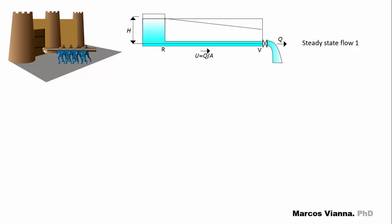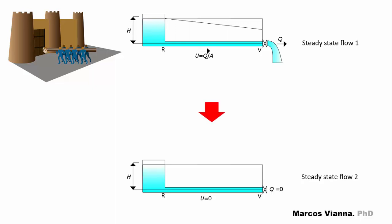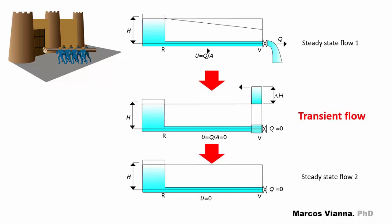When the water flows without having its properties change over time, we say that it's in a steady flow condition. When the water is not flowing, it's another steady flow condition. As the flow condition changes from one steady flow state to another, a transient flow condition occurs. It's in this condition that the water hammer will happen.